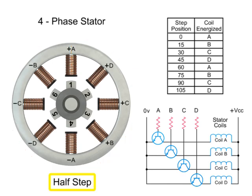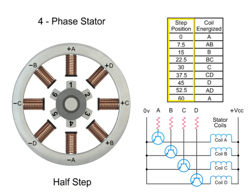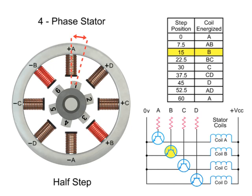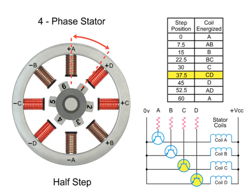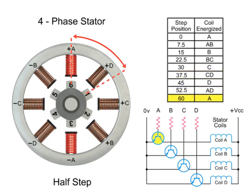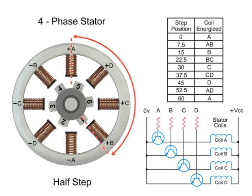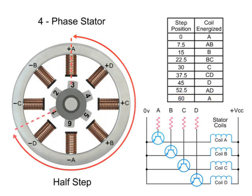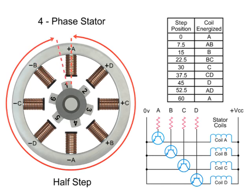For half-step mode, the stepper motor's resolution can be doubled by altering the switching of coils. Half-stepping occurs when one winding is energized and then two windings are energized alternately, causing the rotor to rotate at half the distance. Switching coils in this combination will rotate in the reverse direction. As you can see in this example, 48 steps are required to make a full rotation at 7.5-degree increments.